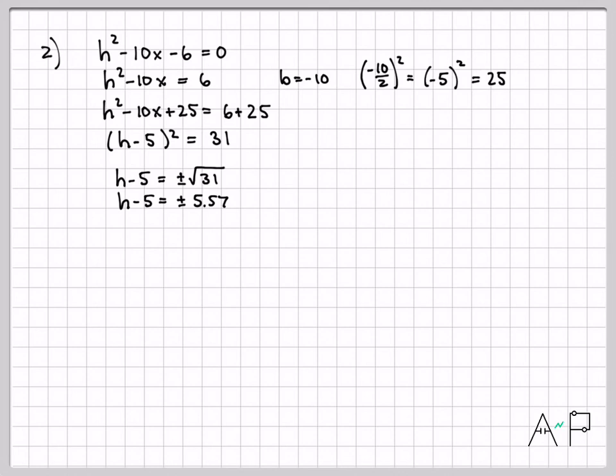If I plug in my calculator what the square root of 31 is, it's about 5.57. And now I really have two equations. H minus 5 equals a positive 5.57, and h minus 5 equals a negative 5.57. I can solve both these by just adding 5 to both sides. If I add 5 to both sides, I get h equals 10.57 and h equals 0.57. So I found two values again. Again, these are the solutions to our starting equation. We found the values for h that make that equal to 0. And we've done it by completing the square.